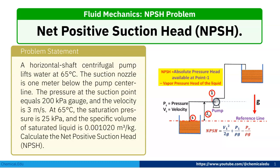A horizontal shaft centrifugal pump lifts water at 65 degrees centigrade. The suction nozzle is 1 meter below the pump from the center line. The pressure at the suction point equals 200 kPa gauge and the velocity is 3 meters per second. At 65 degrees centigrade, the saturation pressure is 25 kPa and the specific volume of the saturated liquid is 0.001020 meter cube per kg.